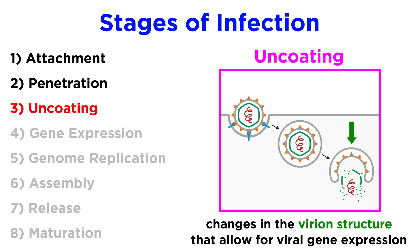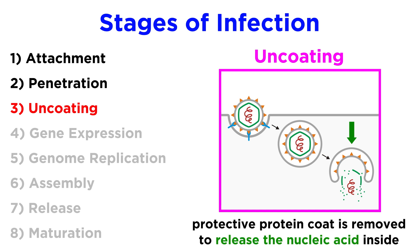With endocytosis, we have a separate uncoating step, which refers to changes in the virion structure that are necessary to allow for viral gene expression. For some viruses, this just means removal of the protective protein coat around their nucleic acid. For more complex viruses, uncoating may occur in several more involved steps.